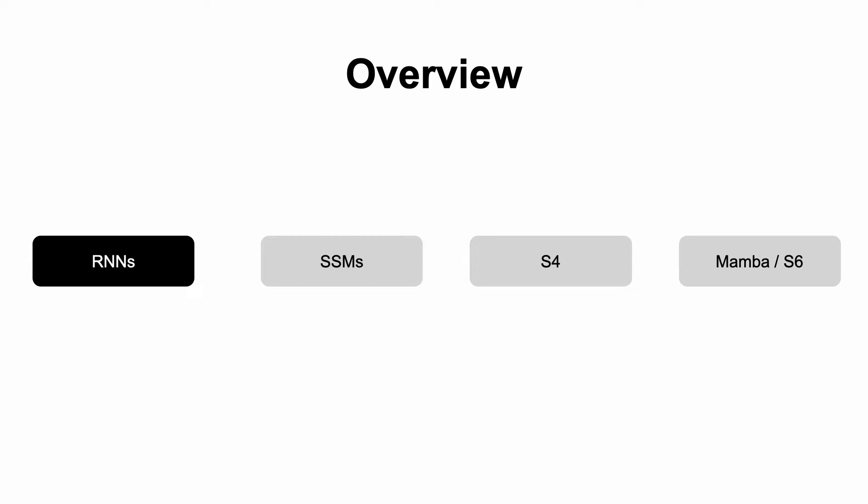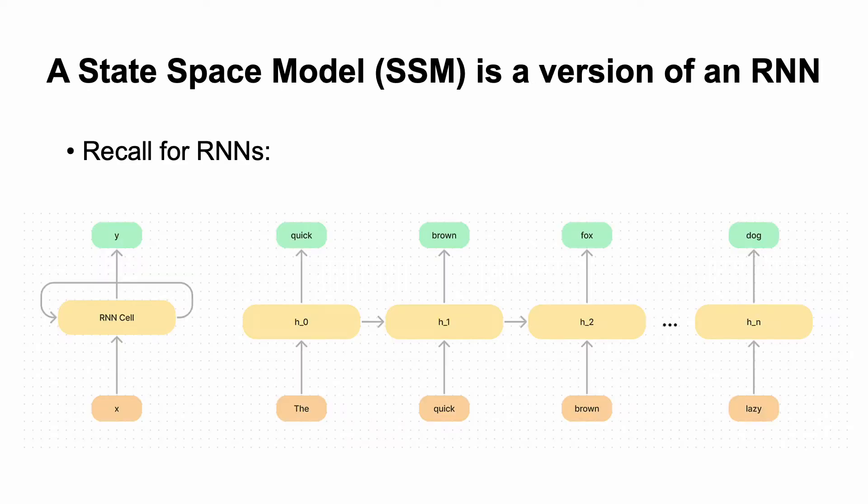Onto RNNs. So recall that RNNs are linear in prediction time for the next word. Why we're talking about RNNs is because state-space models, or SSMs, are a version of an RNN. Essentially, RNNs take the current state and then predict the next.